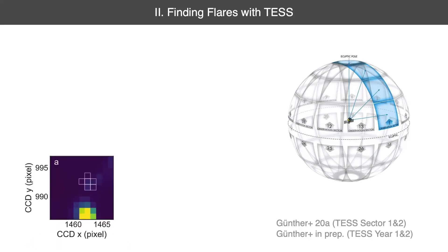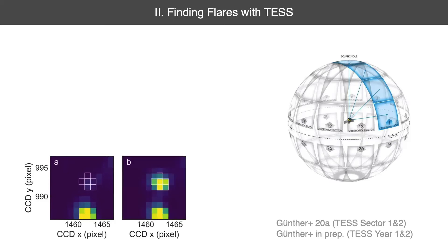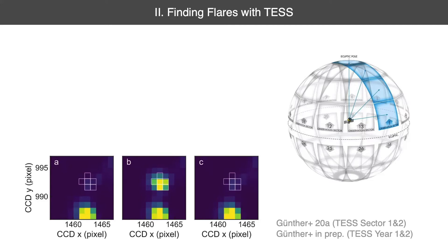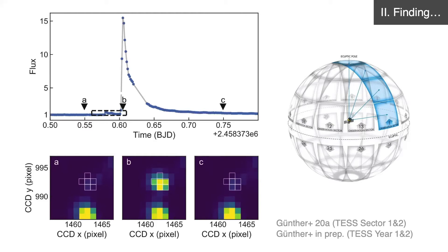What we see here is a cutout of the image TESS takes every two minutes, showing the CCD x and CCD y coordinates. The yellow block here is not the flare — the flare is actually appearing on the star marked in the white pixels. If we go to a timestamp within the flare, we see a massive enhancement in brightness. Going an hour further in time, this brightening event has disappeared again. The light curve shows time in BJD on the x-axis and normalized flux on the y-axis, with the first, second, and third images relating to points a, b, and c marked in the light curve.